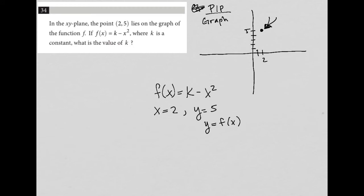So that means I could rewrite this as y equals k minus x squared. Now, hopefully, things start to make a little more sense, because I actually have some values to plug in for y and for x.